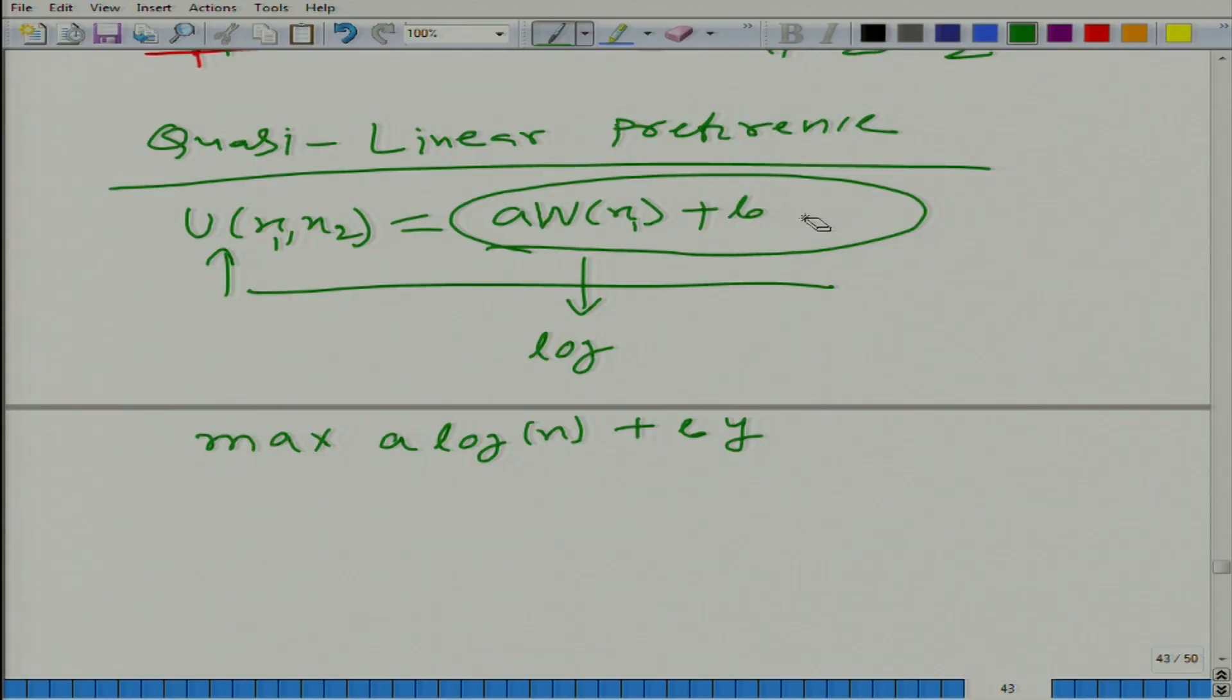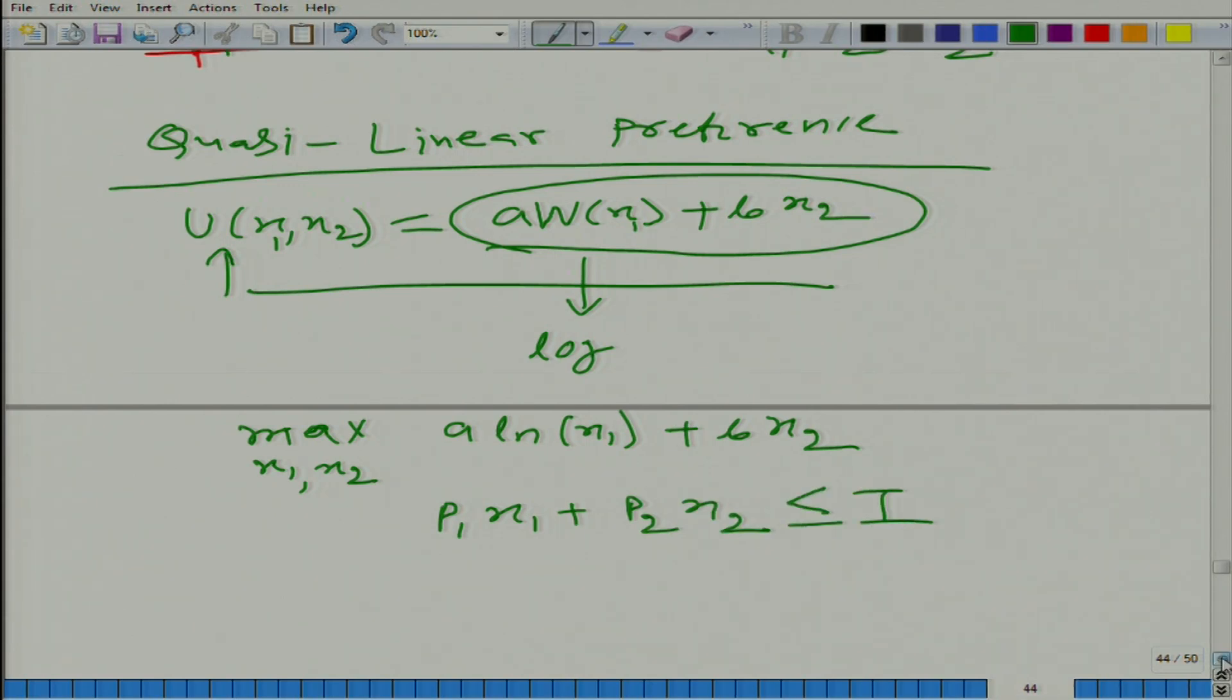So let us say it is x1 and x2, and here we have maximize - this is the last example we are talking about and then we will move to next topic. a*ln(x1), this is natural log, ln is natural log, and let us say b*x2. And the budget is p1*x1 plus p2*x2 and it should be less than equal to i. How will you proceed?